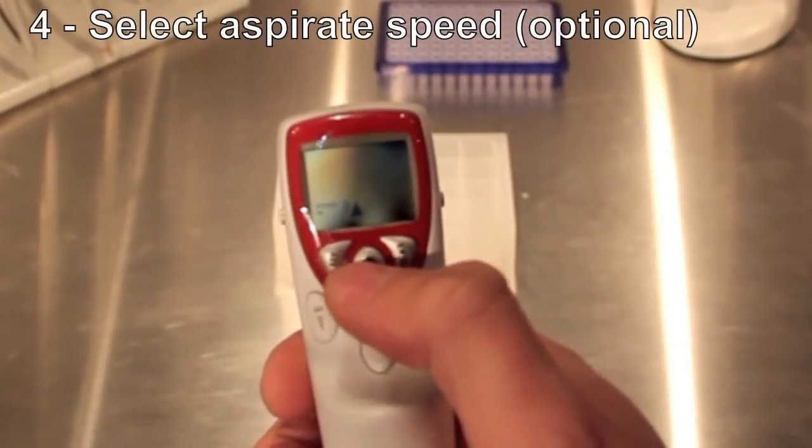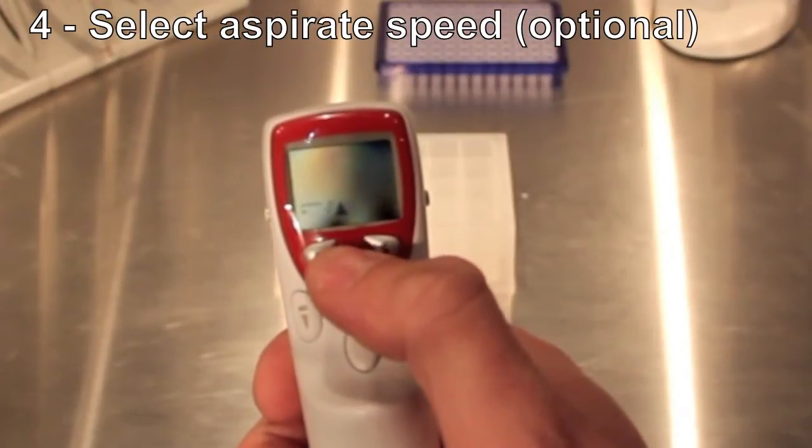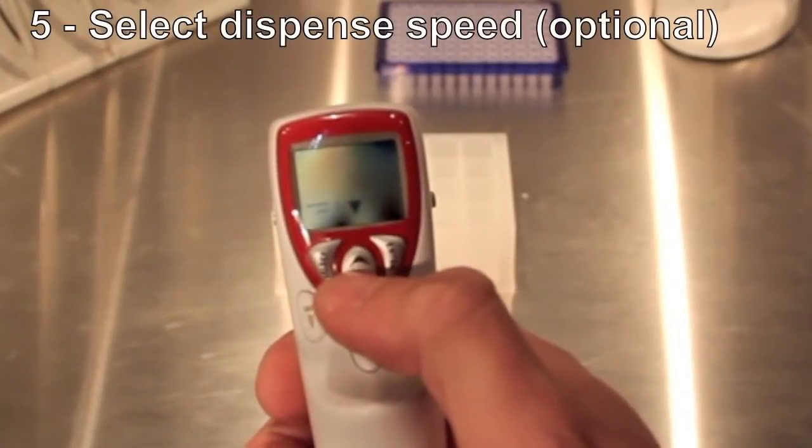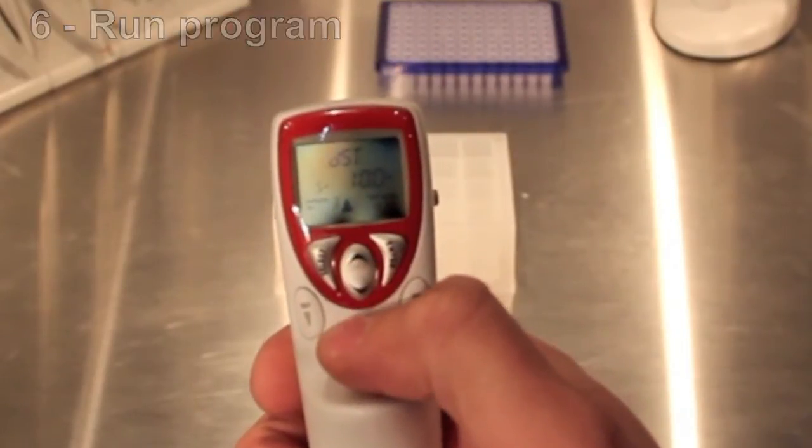There are a couple of optional settings, which include the aspirate speed as well as the dispensing speed of the unit. Once you have completed your program, you simply press the center button to run it.